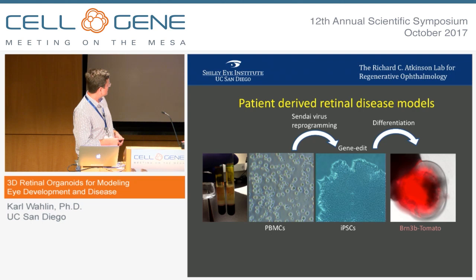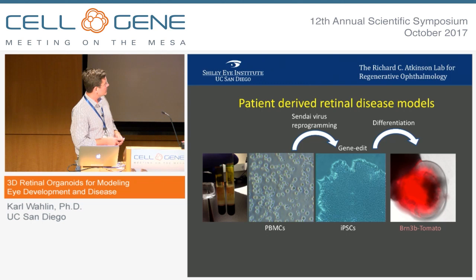In this particular case, we took PBMCs from a patient with glaucoma, isolated these cells, reprogrammed them with a Cinevirus, and then gene-edited them to include a BRN3 ganglion cell reporter. Then we differentiated them. The system is working well — proof of principle.